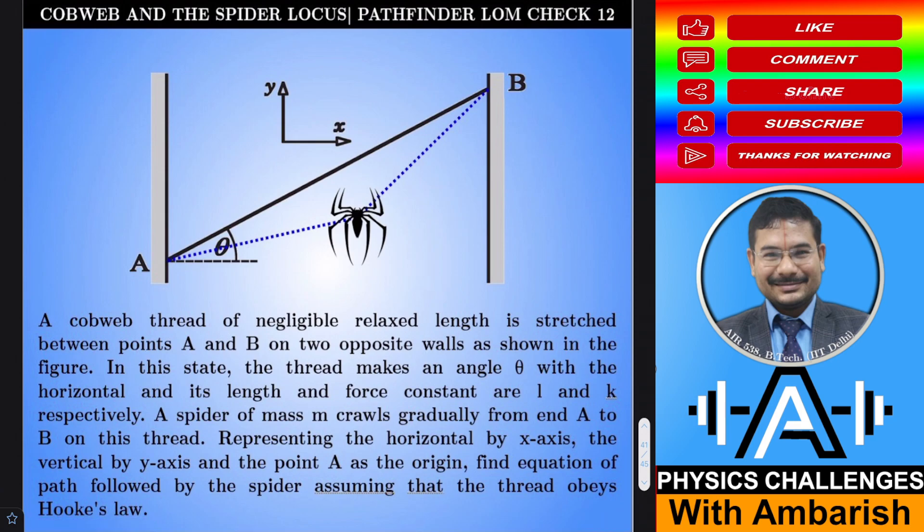find the equation of the path followed by the spider assuming that the thread obeys Hooke's law. Not mentioned in the question but you can take this point A as the origin and you have to find the trajectory of the spider. If you want you can give it a try, I will get into my analysis right away.